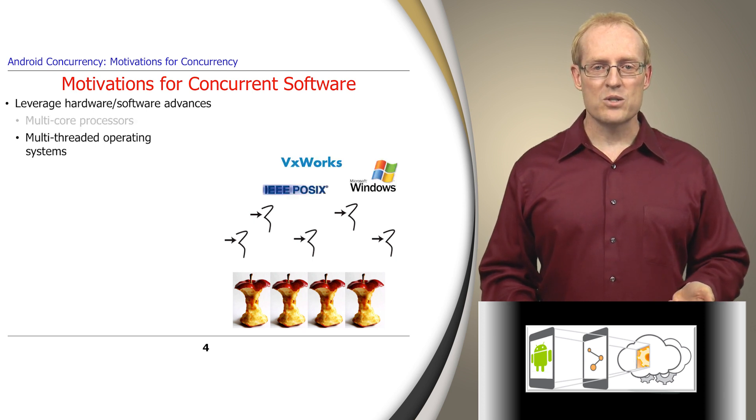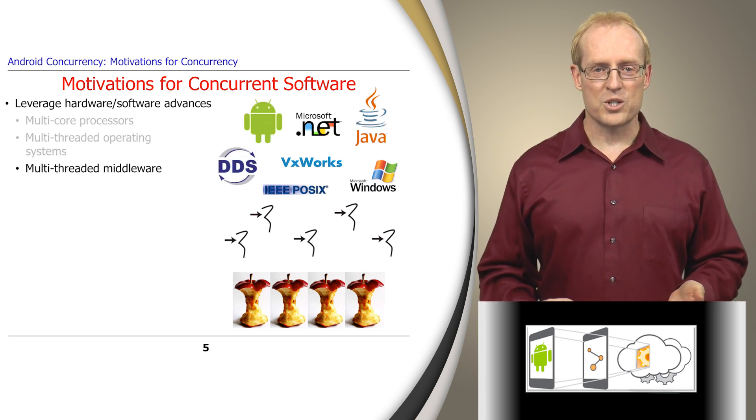Operating systems like Unix, Windows, and VxWorks are now optimized to exploit these multiple cores efficiently. Likewise, middleware such as Java Virtual Machines, Android, DDS, and .NET can take advantage of multiple cores.